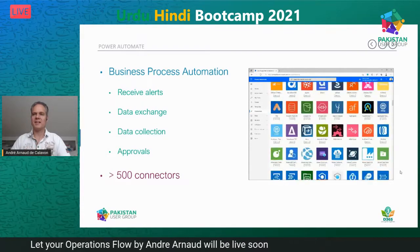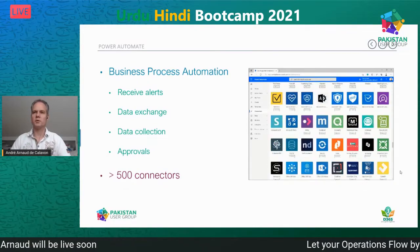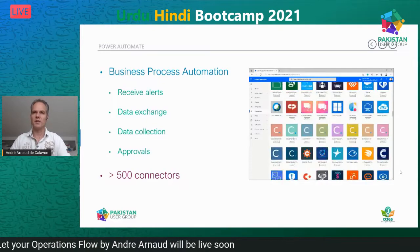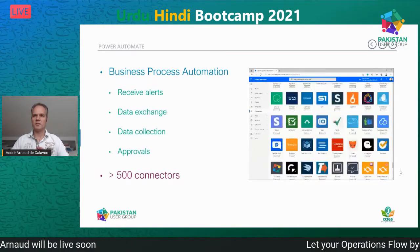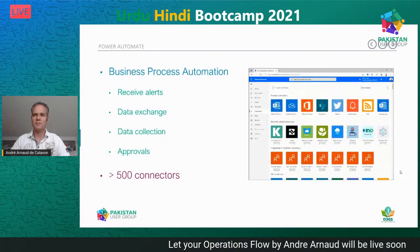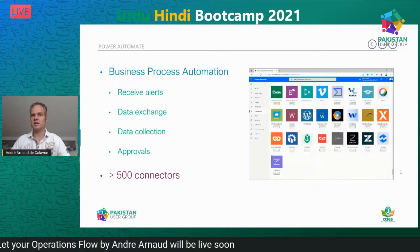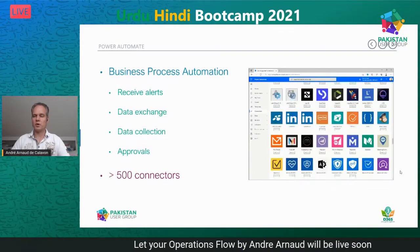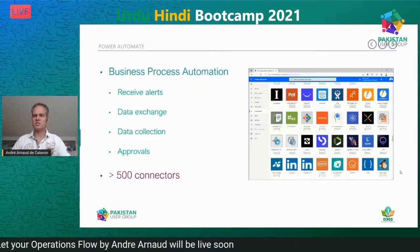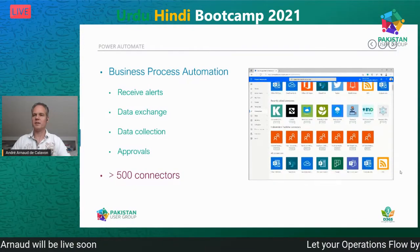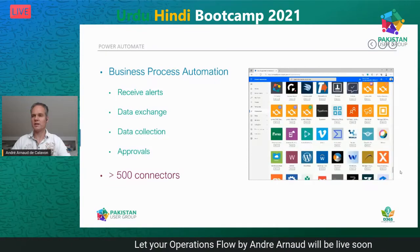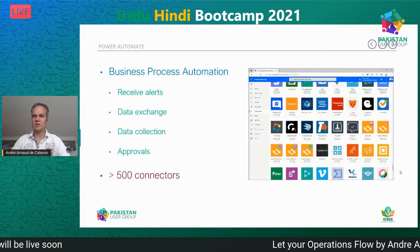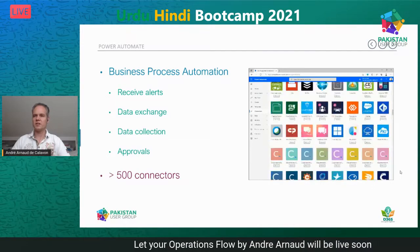I won't go into Robotic Process Automation today — I want to focus on everything related to the Finance and Operations connector. With Business Process Automation and over 500 connectors, you can do a lot: receive alerts, data exchange, collect data, approvals, and much more. When I first played with Power Automate, I could click a button on my phone to collect my location and a timestamp into an Excel sheet — useful for tracking vacation spots.